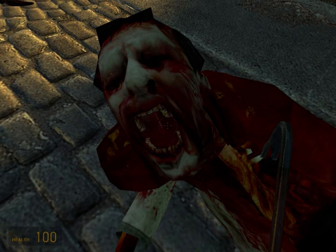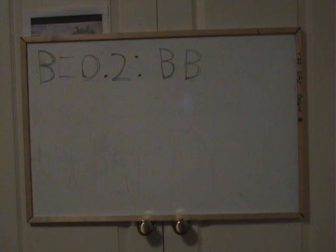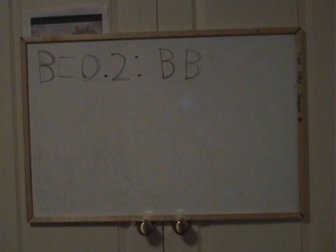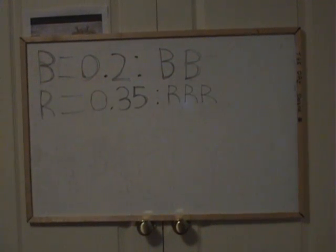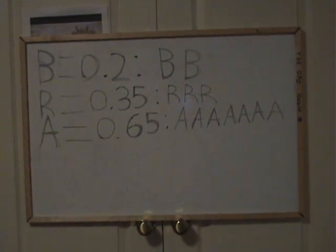Braaaains. Okay, so as you can see here, the B lasts for 0.2 seconds, therefore there are two Bs. The R lasts for 0.35 seconds, there are three Rs. The A lasts for 0.65 seconds, therefore there are seven As.